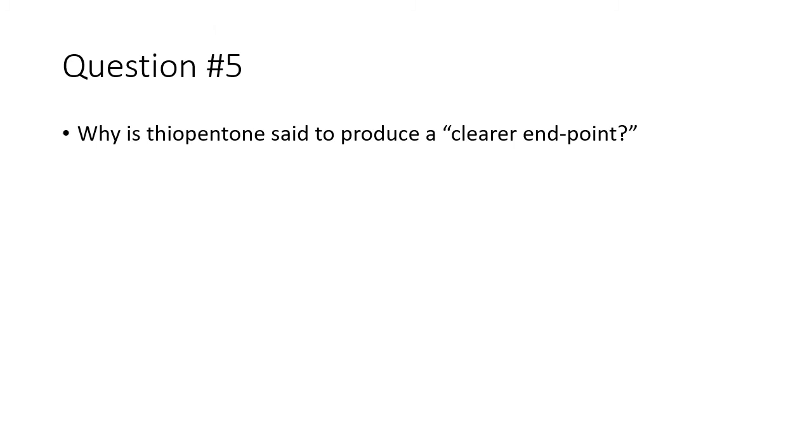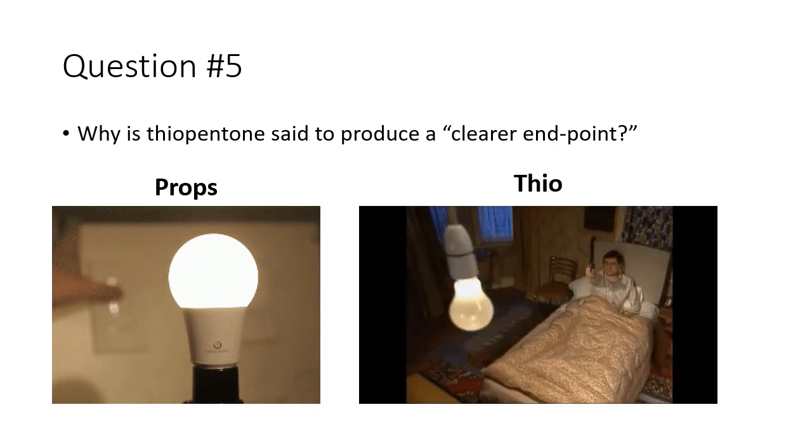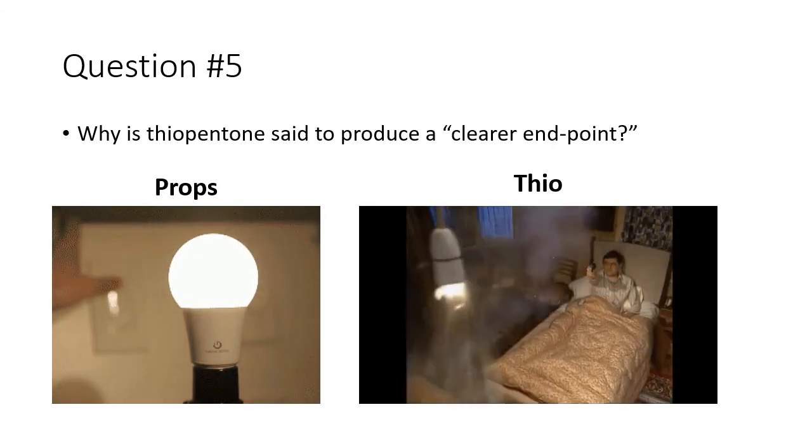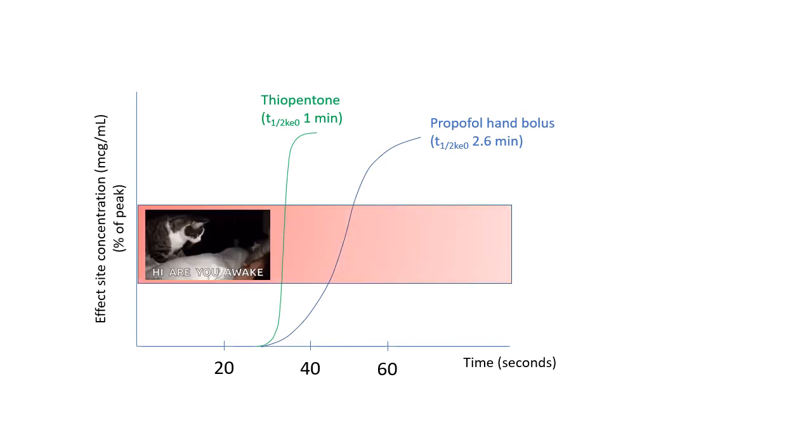The last question I would like you to consider is this. Thiopentone and propofol both produce anaesthesia, primarily by their actions at the GABA receptor. Why is it that propofol should dim the lights slowly, while thiopentone kills them instantly? This is what I think might be happening. Thiopentone has an effect site equilibration half-life of 1 minute, compared with propofol's 2.6 minutes. This means that there is much faster equilibration between the plasma and effect site for thiopentone than there is with propofol. This means that the transition between zero concentration and anaesthetic concentration for thiopentone is fast, whereas the transition between zero and anaesthetic concentration for propofol is comparatively slow.